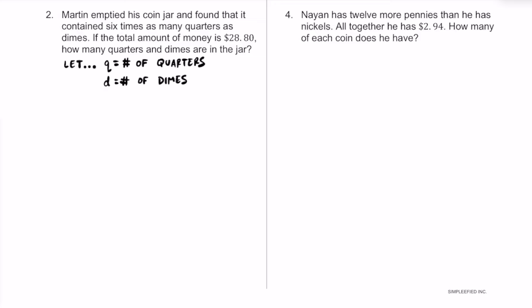We're told the jar has six times as many quarters as dimes. So for our first equation, the number of quarters equals six times the number of dimes: Q = 6D. For example, if D were 2, then Q would be 12 — six times more. If D were 5, then Q would be 30.